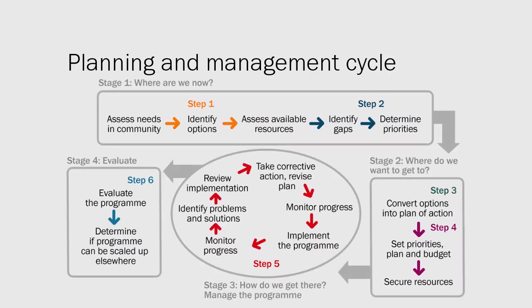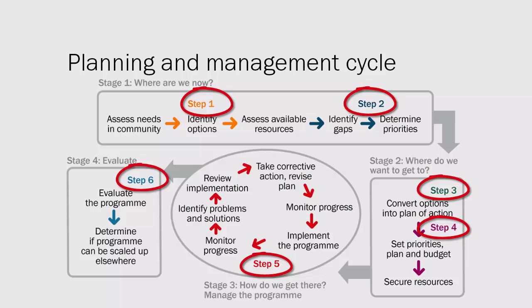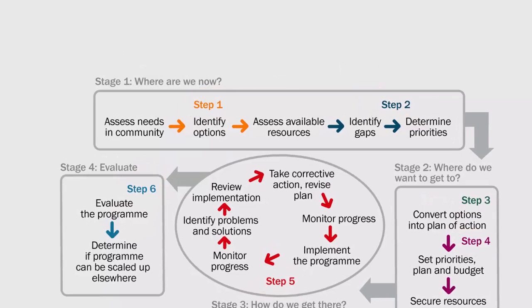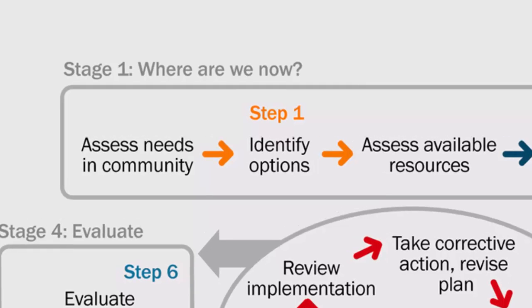Success. To finish the presentation, we're going to look in more detail at the program planning and management cycle. There are six steps to the activities in this cycle. Stage one of planning — understanding where we are now — has two steps in program planning and is known as a situation analysis.